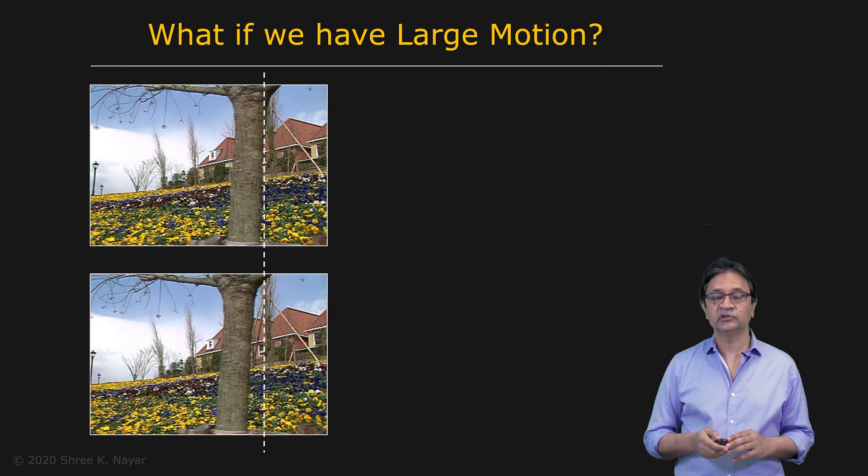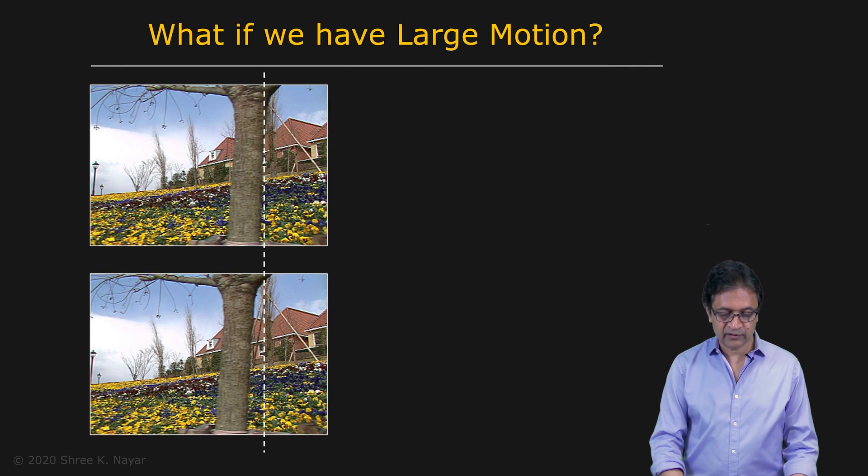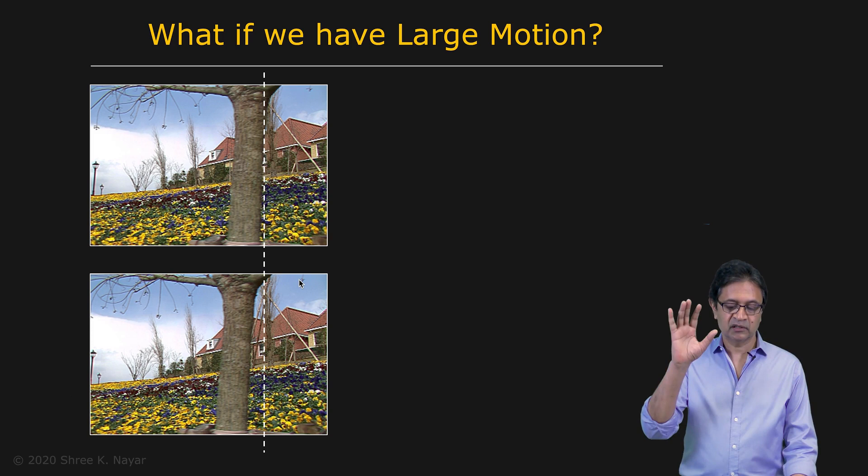When we derived the optical flow constraint equation, we made the assumption that the displacements delta X and delta Y are really small. So what happens if you have large motion between consecutive images? Consider this case here. You have two images taken in quick succession. Let's assume that in this case the camera is moving and that's the cause of the motion.